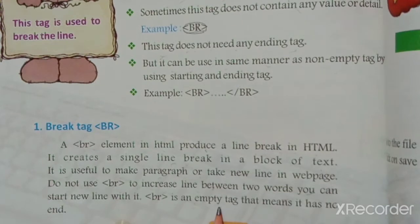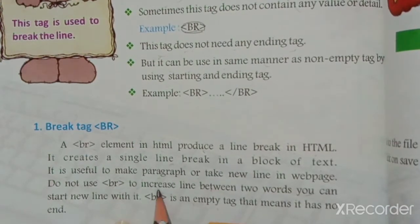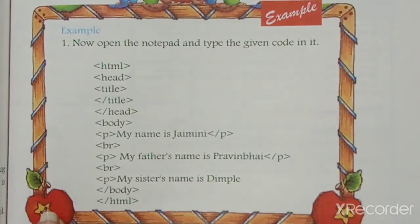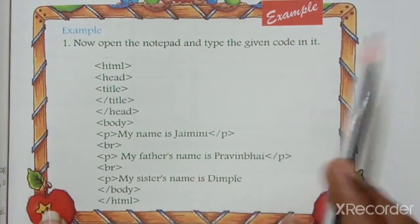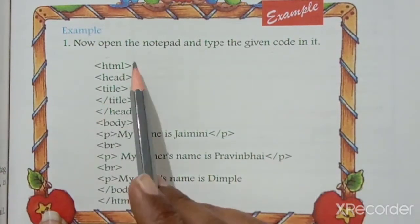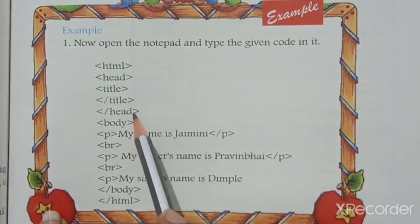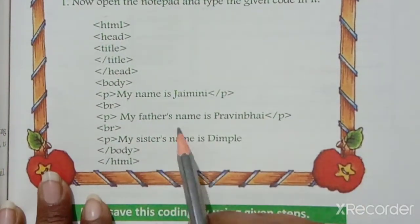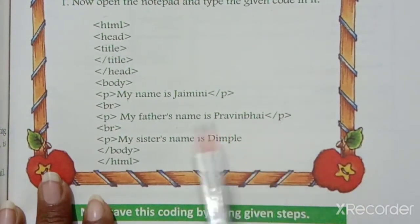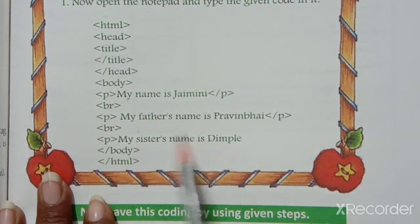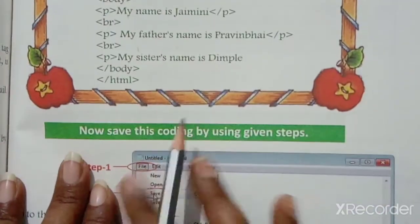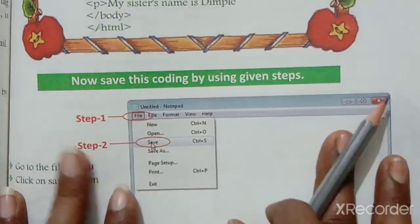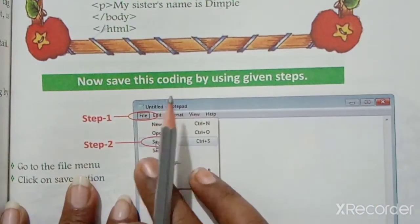Empty tag has no end tag. For example, open Notepad and type the given code: HTML, heading, title, head, body — 'My name is Jamin' P BR empty tag, 'My father's name is Raveen Bhai' P, 'My sister's name' — body, slash HTML. That means finish the program.